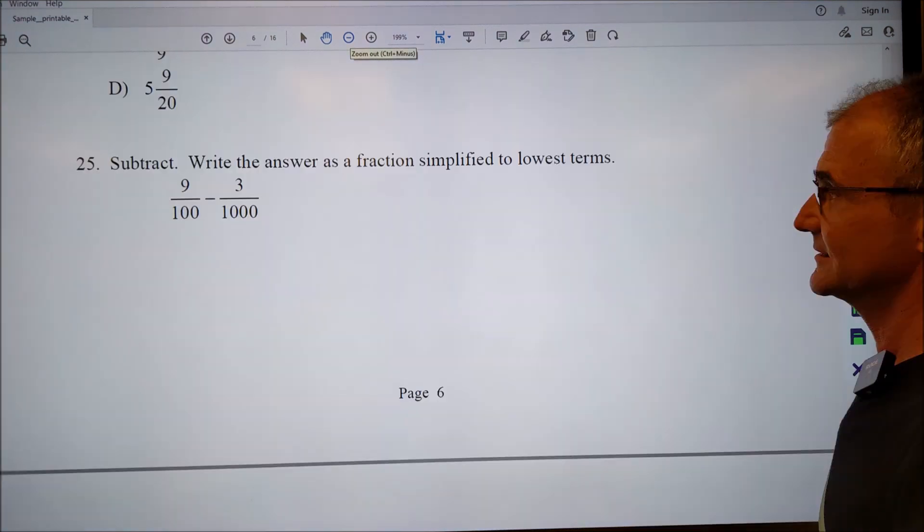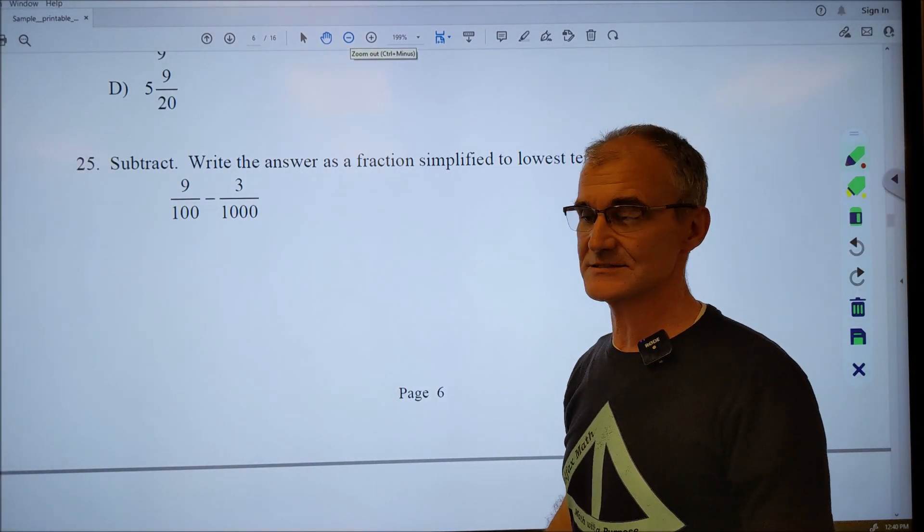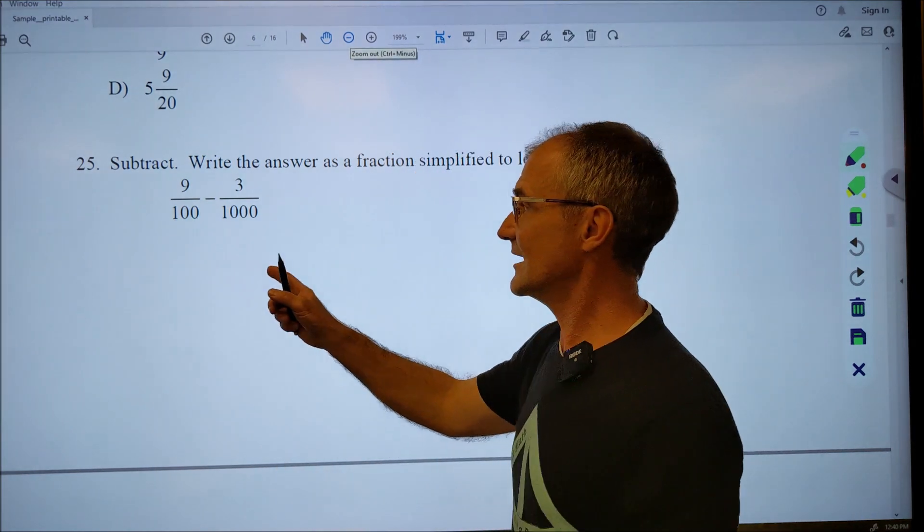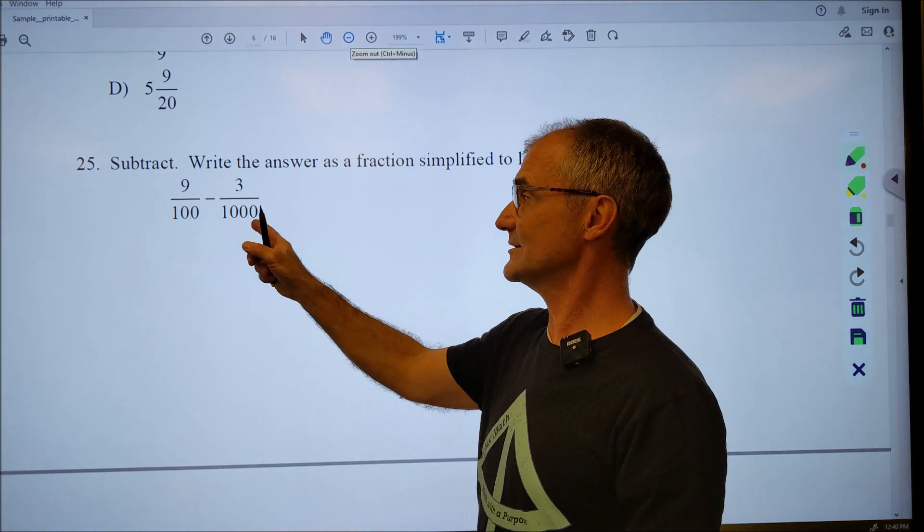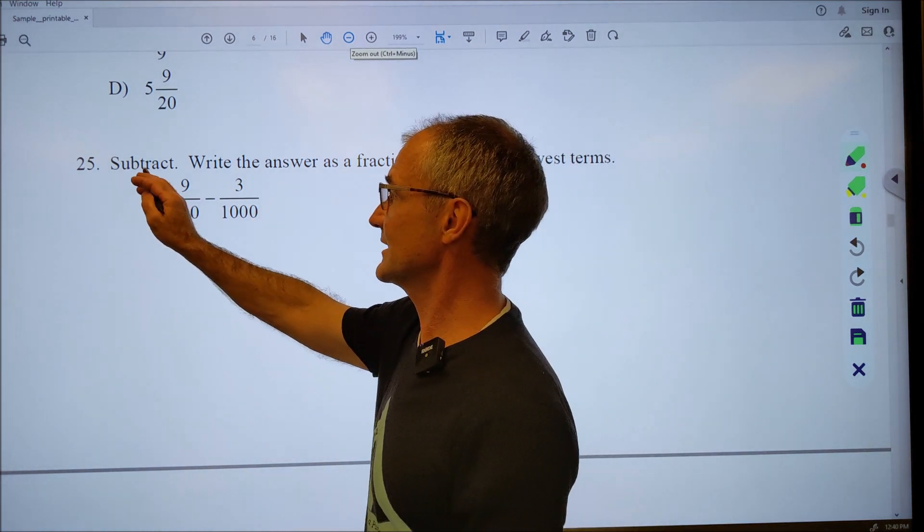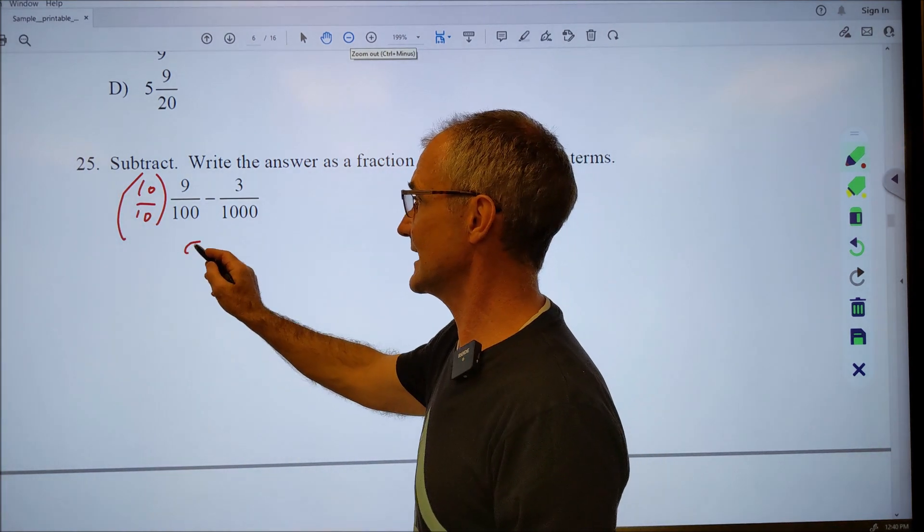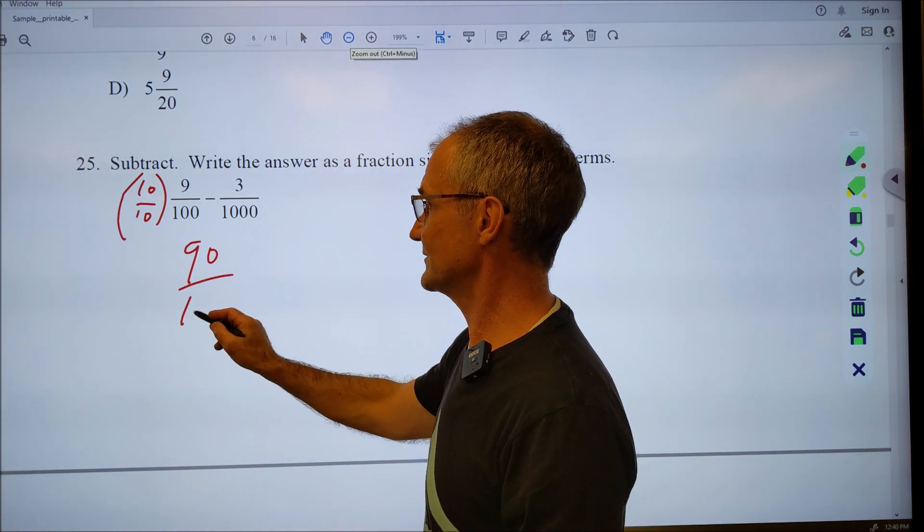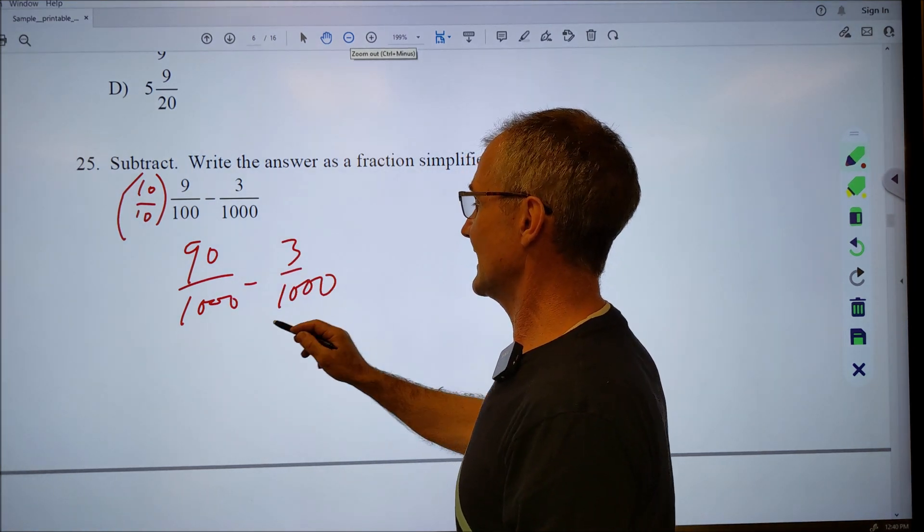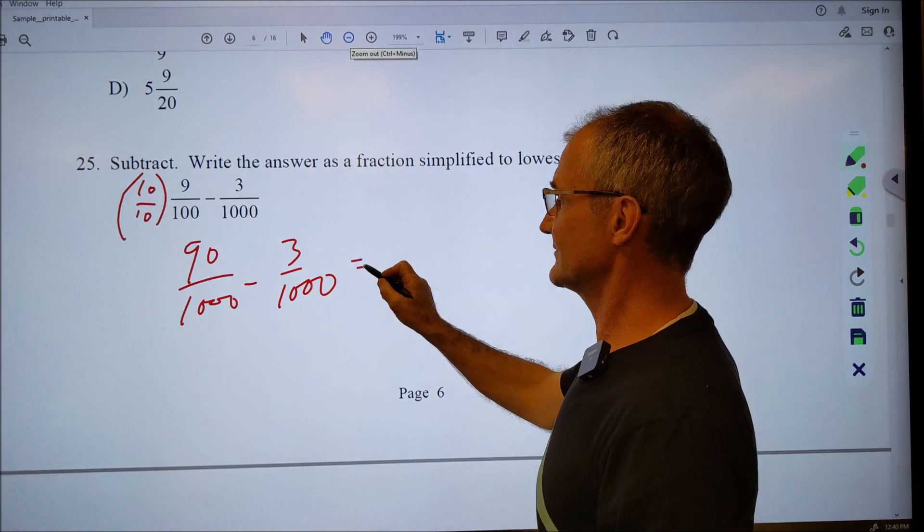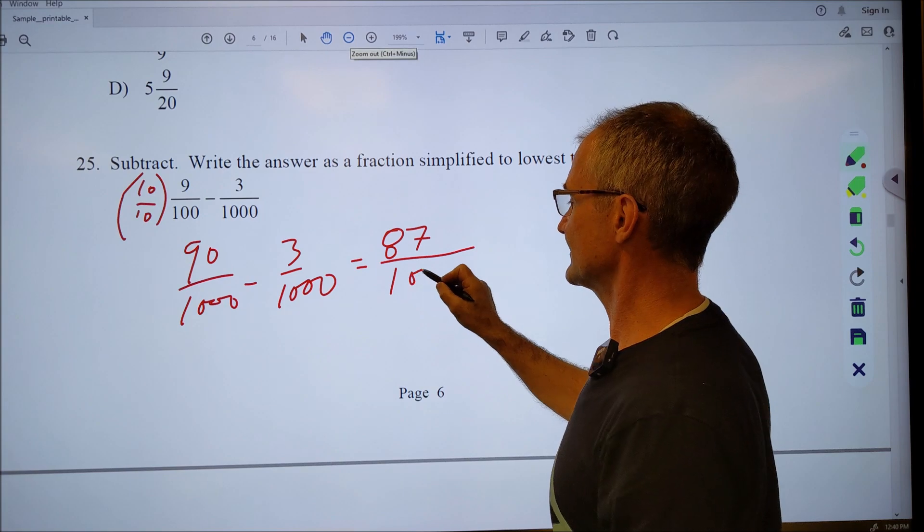Number 25, subtract the two fractions. Subtracting fractions, same as adding, you have to have a common denominator. This is a hundred, this is a thousand. So that common denominator is going to be a thousand. So I got to multiply this one by ten over ten. That's going to give me 90 one thousandths minus three one thousandths. I have that common denominator of a thousand. Ninety minus three, 87 over that common denominator of a thousand.